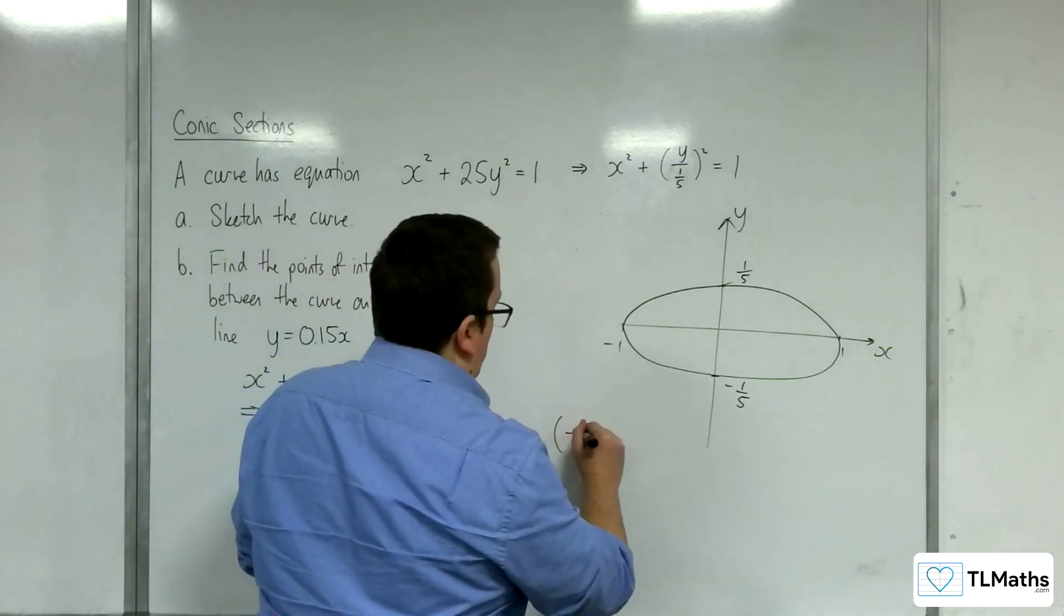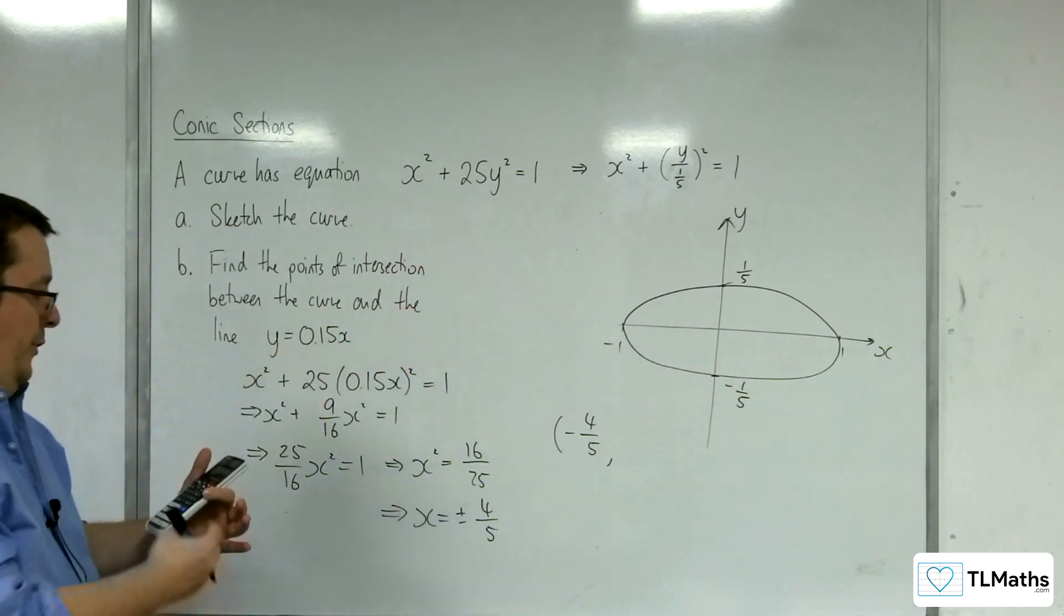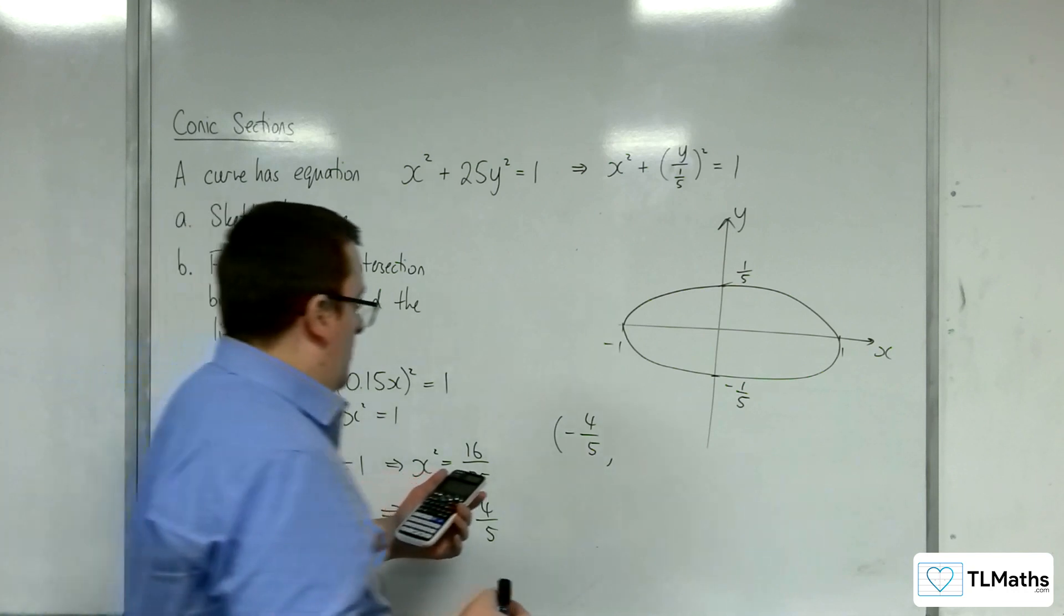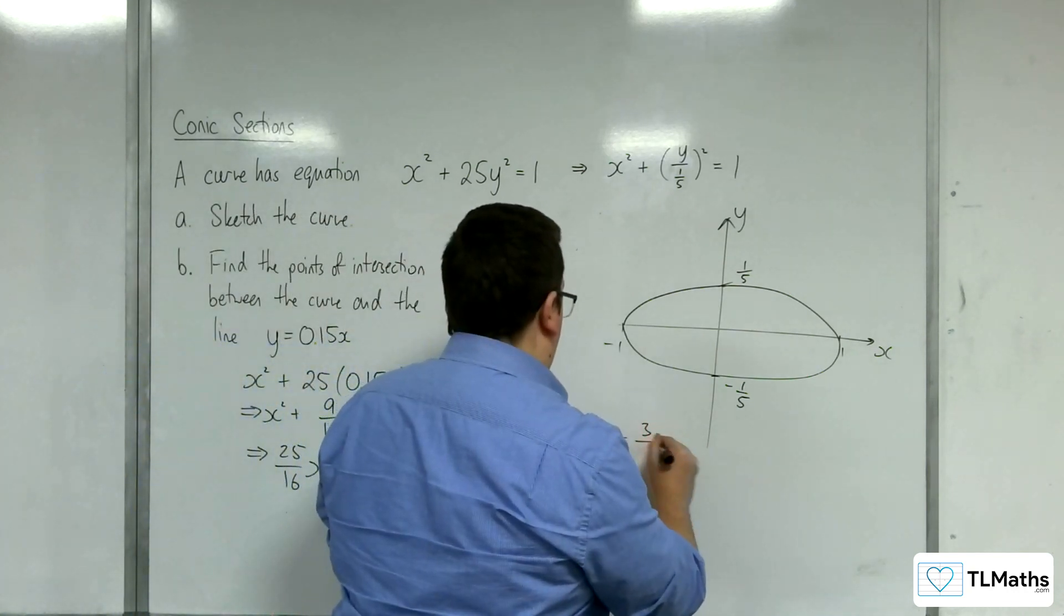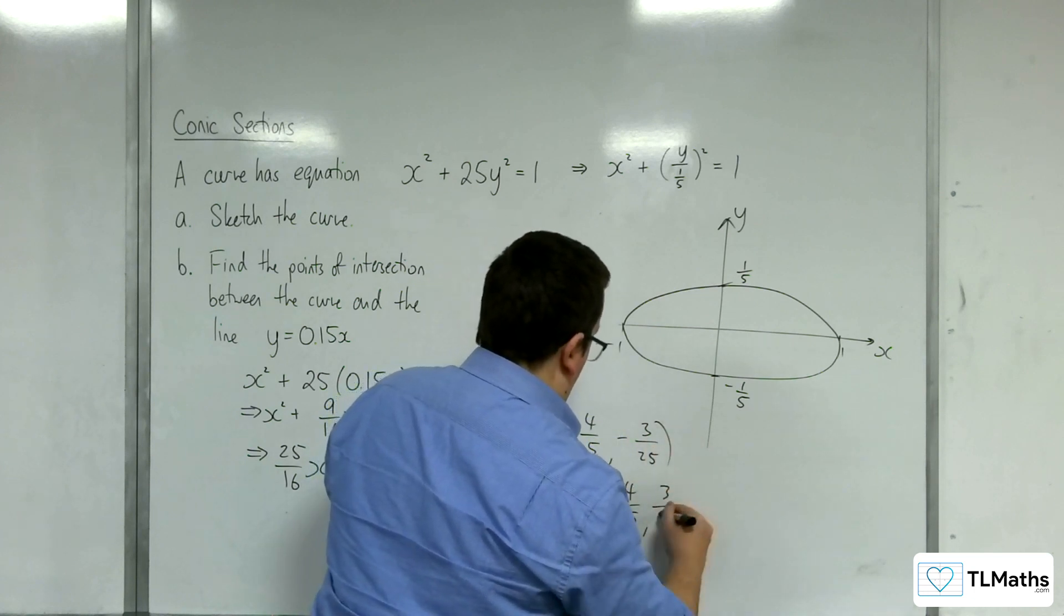So, our points of intersection will be minus 4 fifths times 0.15, which is minus 3 over 25, and positive 4 fifths, 3 over 25. And they will be my points of intersection.